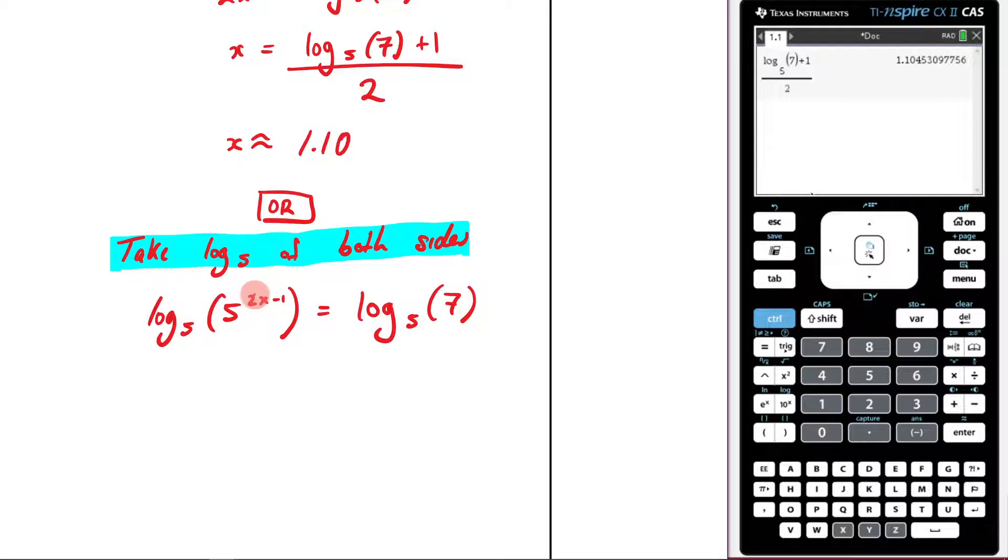Then, once I'm here, this 2x minus 1 can go to the front, because remember, that's one of my log laws, that I can take the power of the argument and take it to the front. So that means I'm going to get 2x minus 1 log 5 of 5. Now, you can probably see why I chose to take the log with a base of 5.